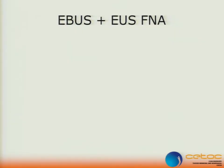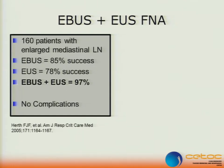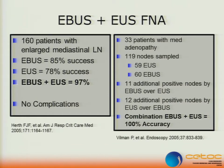What about if you combine EBUS and EUS? What is the additional value? 160 patients with enlarged mediastinal lymph nodes: EBUS had an 85% success rate at diagnosing these lymph nodes; EUS, 78%. When they combined the two, there was a 97% success rate. A small study of 33 patients with mediastinal adenopathy — 119 lymph nodes sampled, 59 by EUS and 60 by EBUS — adding EBUS over EUS added 11 additional positive nodes, and 12 for EUS over EBUS. When you put the two together, there was 100% accuracy.